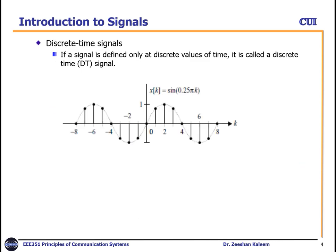Next we will discuss discrete time signals. As mentioned previously, if time is continuous then it is called a continuous time signal. Here, as the name suggests, discrete time means we have time values taken at discrete intervals — for example, from minus 8 to 8 with a step of 1.